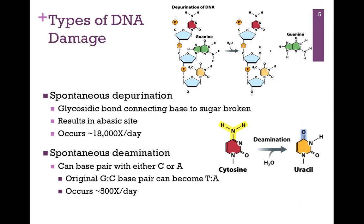There are also other types of DNA damage that occur on a regular basis. One is spontaneous depurination — the glycosidic bond that connects the base to the sugar is broken, as illustrated at the top of the slide. Here, guanine has been spontaneously hydrolyzed so that we release the guanine base and have an abasic site, leaving nothing to direct DNA polymerase as to which nucleotide to incorporate. This actually occurs about 18,000 times in a day. There's also spontaneous deamination that occurs with cytosine bases — the amine group attached to cytosine might be spontaneously hydrolyzed, producing uracil.